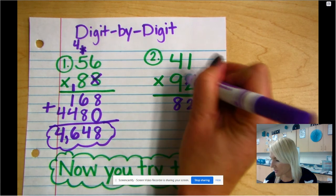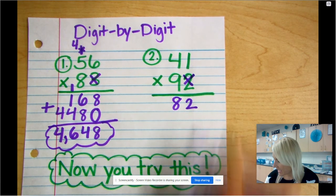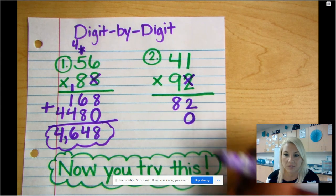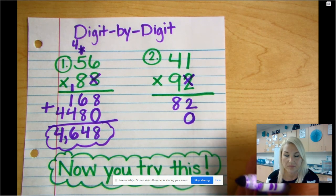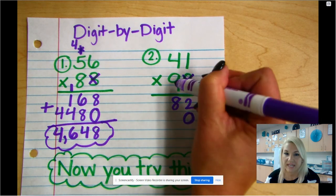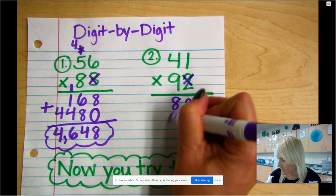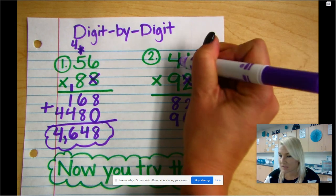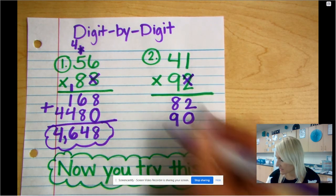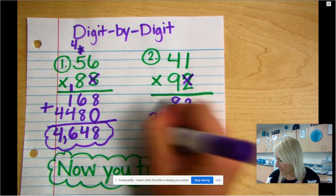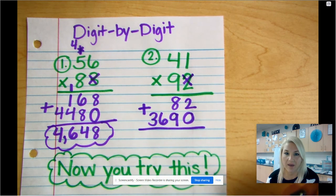But I still have to cross out the ones because I'm done now, and I have to drop a 0 to hold place value. Now I'm gonna go ahead and move over to the tens place and multiply 9 times 1, which is 9, and 9 times 4, which is 36. And now I get to go ahead and add this up.